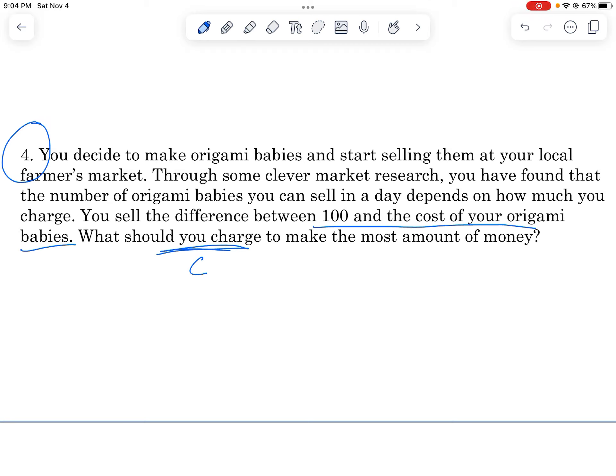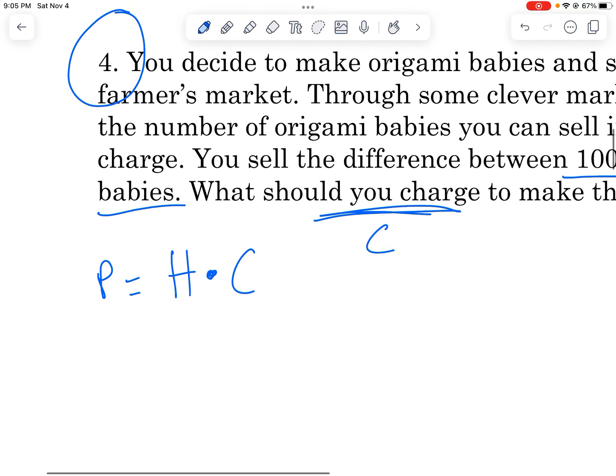Well, this equation is about making the most amount of money. Well, when you make money, we usually call that profit. And then you have to times that by how much you sell them for, which is this C value, how much we're charging people. So this is kind of the basic equation. The profit equals how many you sell times how much you charge.